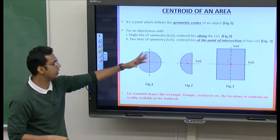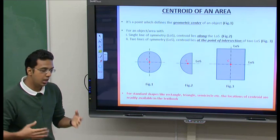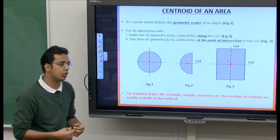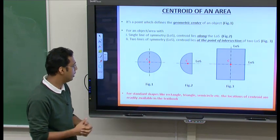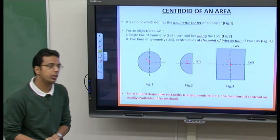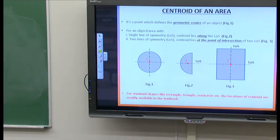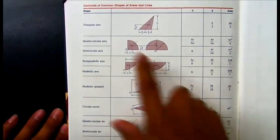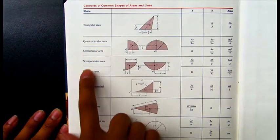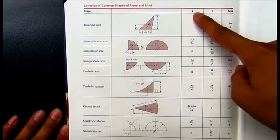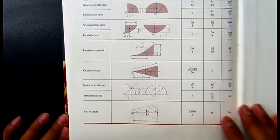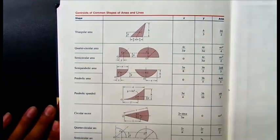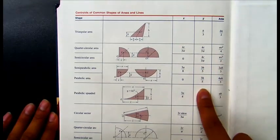Circles, semicircles, rectangles, triangles, and parabolas are all called standard or simple shapes because established formulas already exist to calculate the locations of their centroids. These standard formulas can be found in the textbook. On the document camera you can see the back cover of the Mechanics of Materials textbook, which lists centroids for the triangle, quarter circle, semicircle — including x̄, ȳ coordinates and area for each.